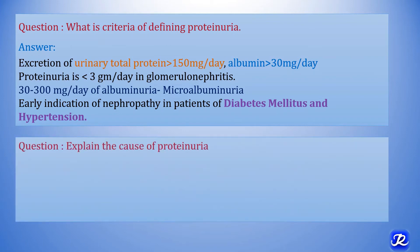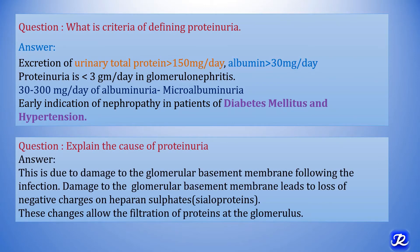The next question is: explain the cause of proteinuria. This is due to damage to the glomerular basement membrane following the infection. In this clinical scenario, the streptococcal infection led to damage of the glomerular membrane. The glomerular basement membrane contains collagen, heparin, and heparin sulfate. This damage leads to loss of negative charges on heparin sulfates, and that is why albumin starts appearing in the urine.